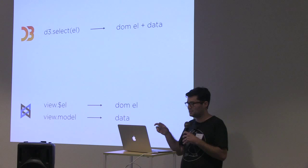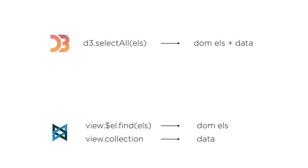In the case where your data is a collection, D3 has a very similar approach — you can select all elements in the DOM and work back to the data. For Backbone, it's an exercise for the reader how you want to manage the mapping between collection data and a view. You could render out to a template with a loop and data ID tags in DOM elements to index back into your collection, or you might have sub-views rendered for each model in the collection attached to the parent view. There are a couple of ways to go about it.